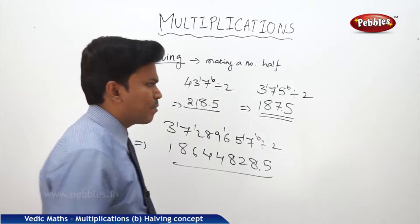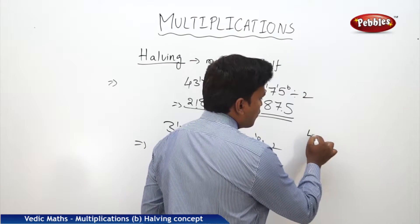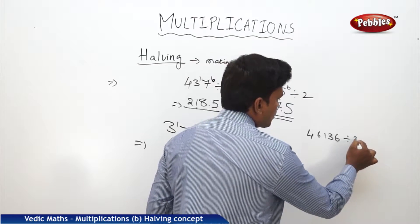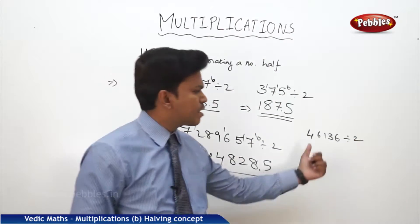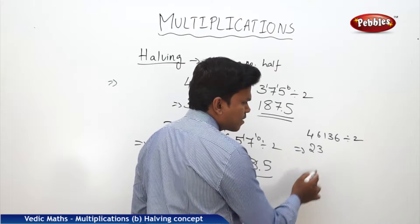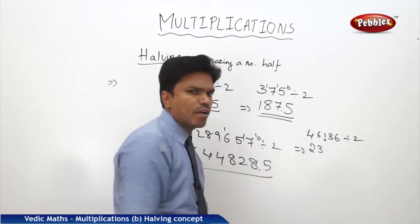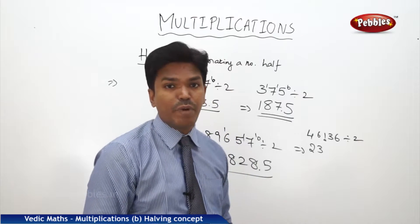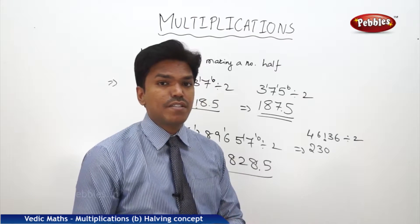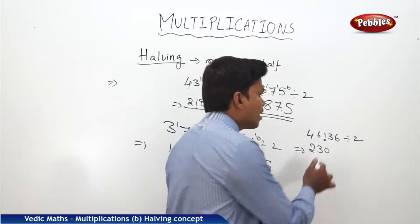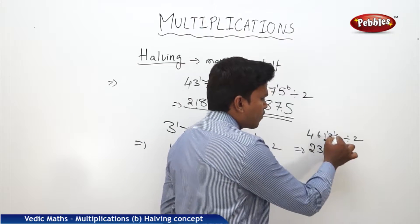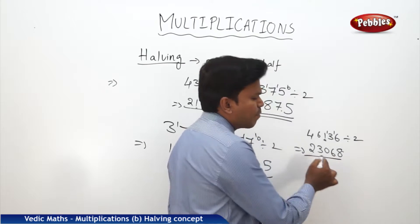Suppose I want to divide 46136 by 2. The answer: 2 twos are 4, 2 threes are 6, 1 does not go into the 2 table so it goes 0 times with remainder 1. Put that 1 before the next digit to make 13. 2 goes into 13 six times with remainder 1, then 2 eights are 16. So the half is 23068.